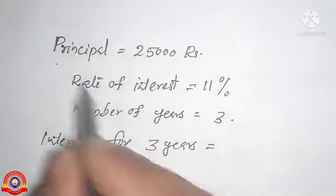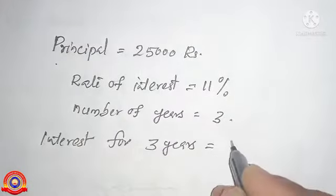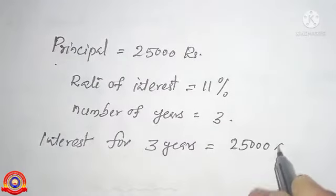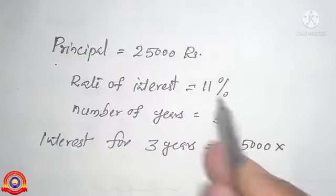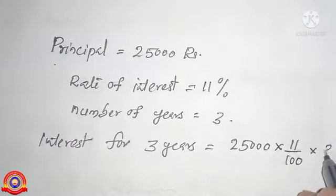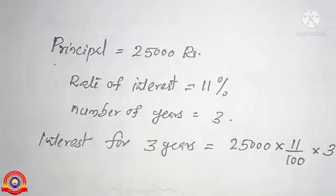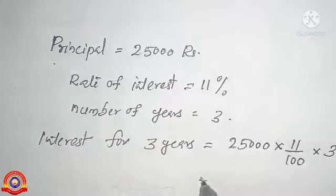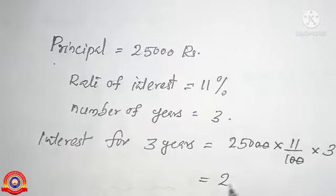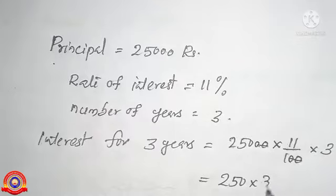Interest for 3 years is equal to 25,000 into 11 by 100 into 3. We cancel two zeros on both numerator and denominator, so it becomes 250 into 33, which is equal to 8,250 rupees.